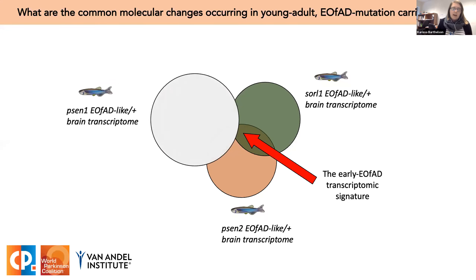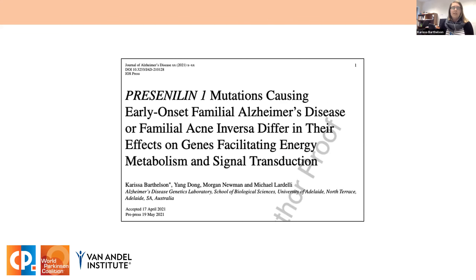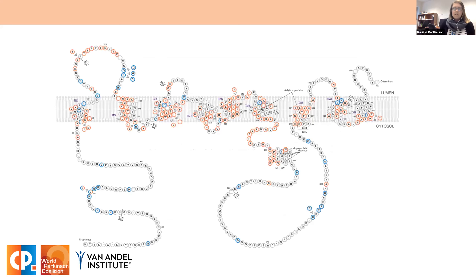I don't have time to tell you all the full details today, but I'll first tell you about my work on presenilin-1, which was recently published — you can find more information in the Journal of Alzheimer's Disease. Presenilin-1 is the gene most commonly mutated in EOFAD. Here's a schematic of the protein — the orange residues are sites of pathogenic mutations and the blue residues are mutations with uncertain pathogenicity. The role of presenilin-1 in the cell is complex; it's most well known for its role in the gamma secretase complex, but has many other functions as well.